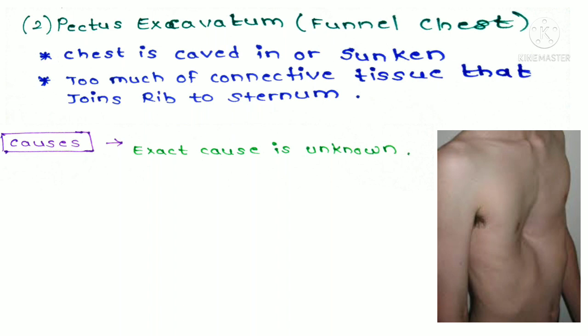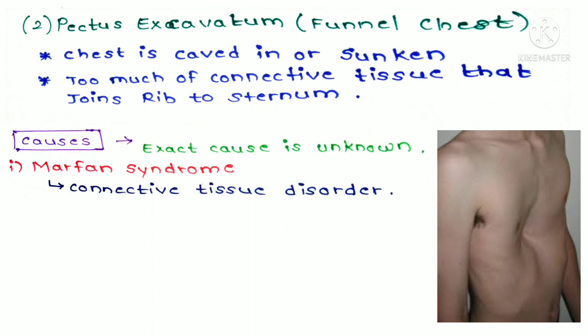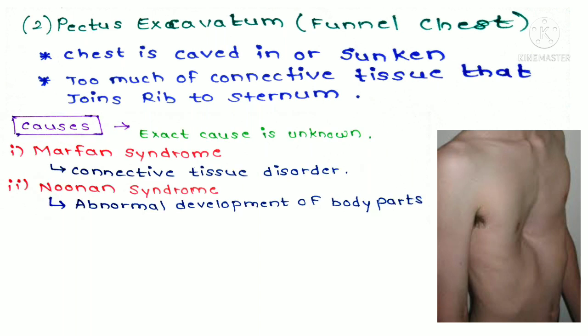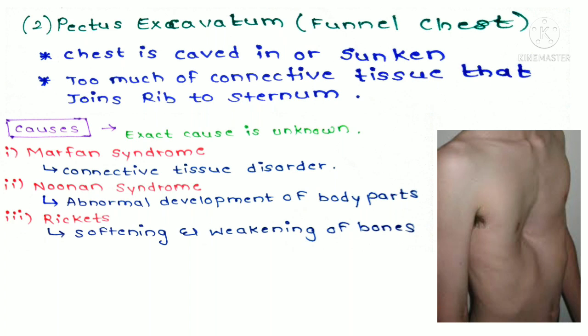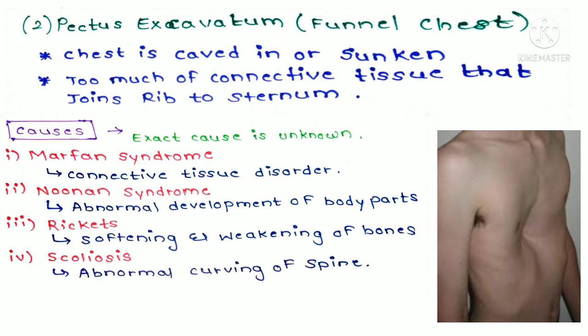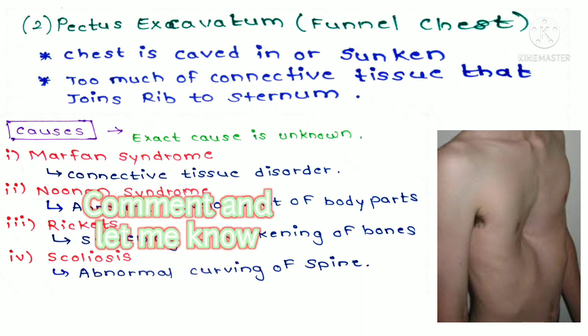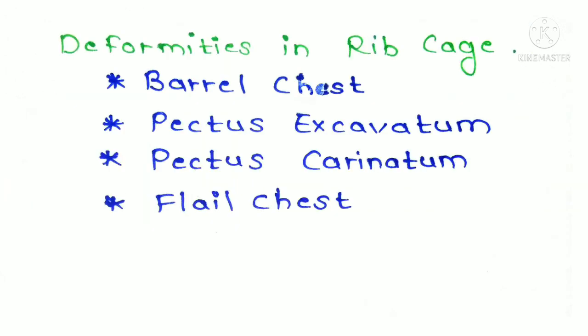The exact cause of pectus excavatum or funnel chest is unknown, but it is linked with several conditions like Marfan syndrome, which is a connective tissue disorder; Noonan syndrome, a disorder that causes abnormal development of parts of the body; rickets, which is softening and weakening of bone; and scoliosis.